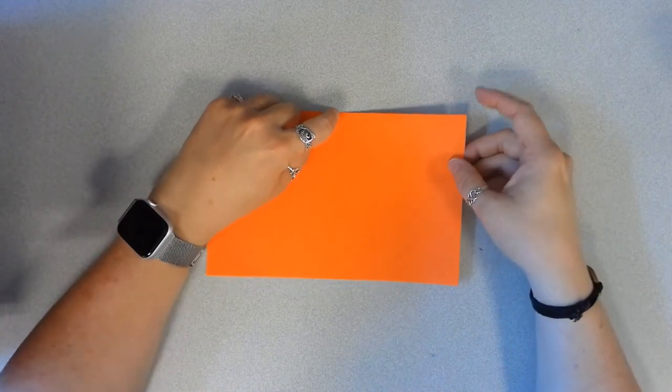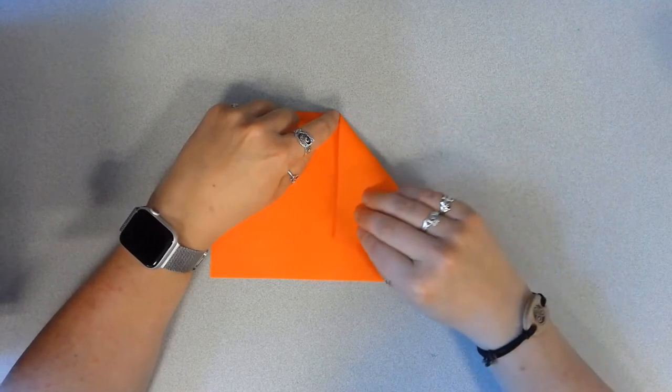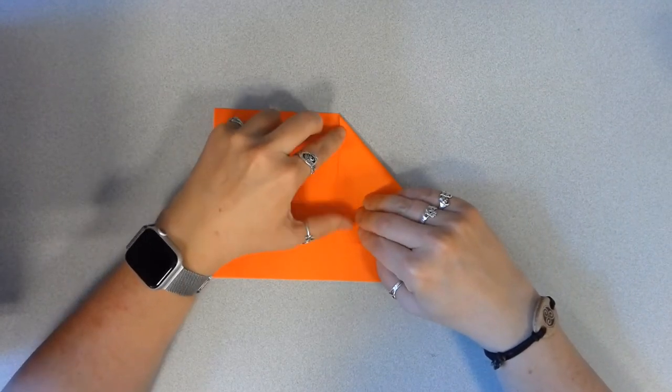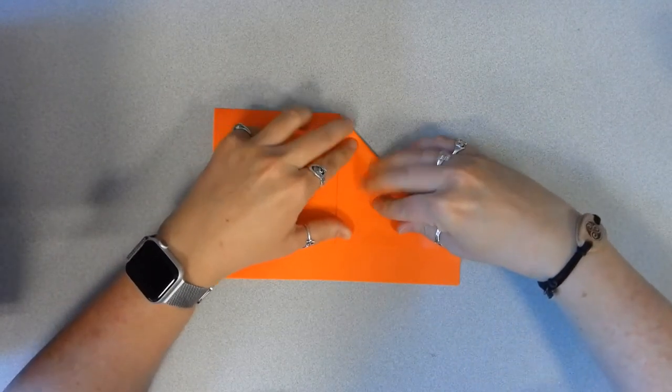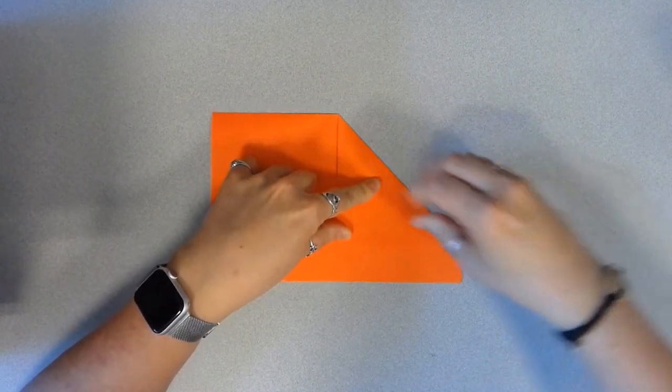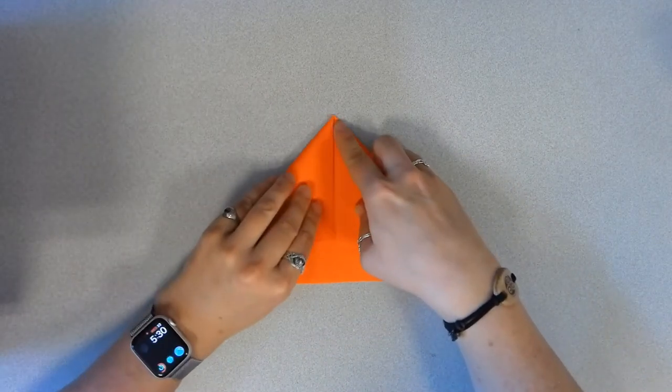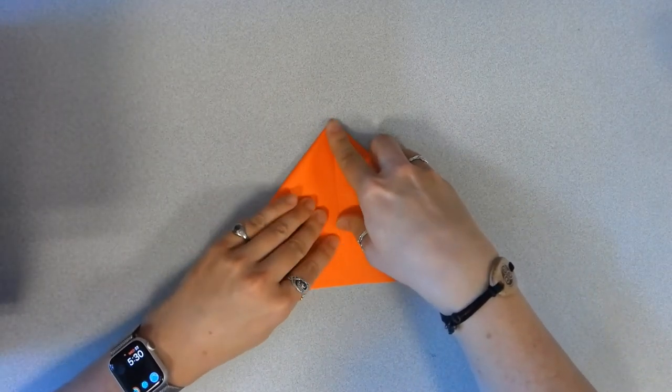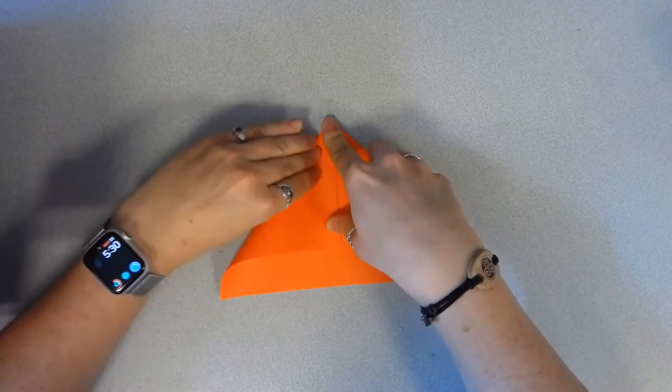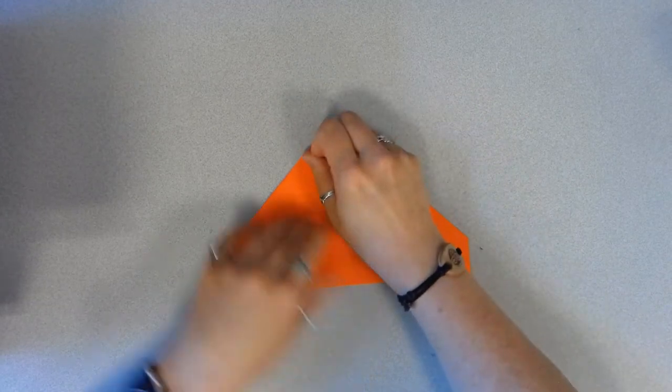So our next fold to make our rain hat, we're going to fold this top corner down. We're going to start making kind of a triangle. Give that a good fold and a good crease. And then we're going to fold this other top corner down to meet it. There we go. We're almost finished with our rain hat.